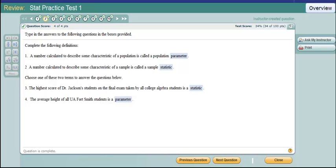A number calculated to describe some characteristic of a population is called a parameter. The same thing for a sample. A number calculated to describe some characteristic of a sample is called a sample statistic. Notice population and parameter both start with p. Sample and statistic both start with s.